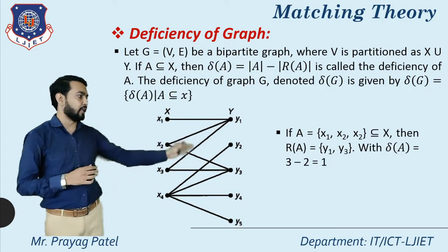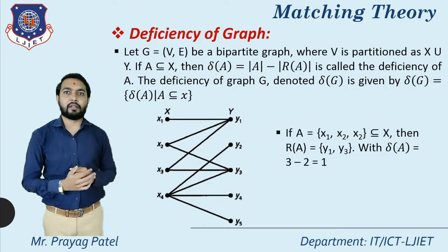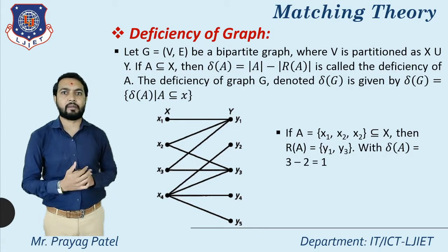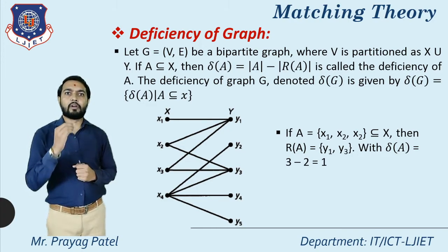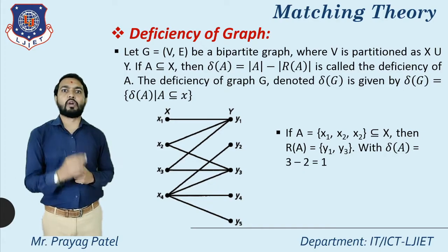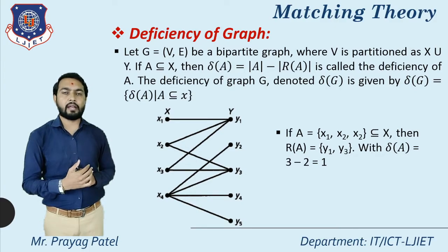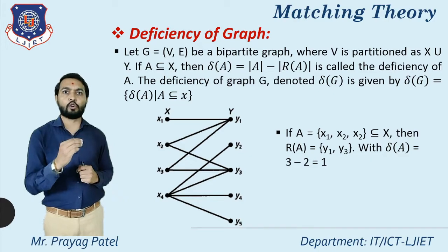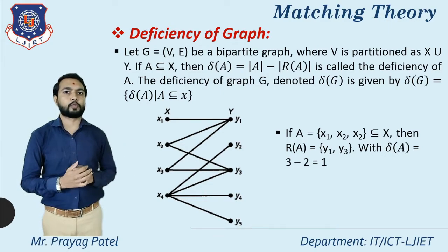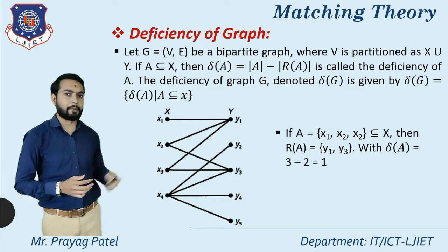For example, if A = {x1, x2, x3} ⊆ X, then R(A) = {y1, y3} because x1 is connected with y1, x2 is connected with y1 and y3, and x3 is connected with y1 and y3. So R(A) = {y1, y3}. Then δ(A) = |A| − |R(A)| = 3 − 2 = 1. So the deficiency of set A equals one.